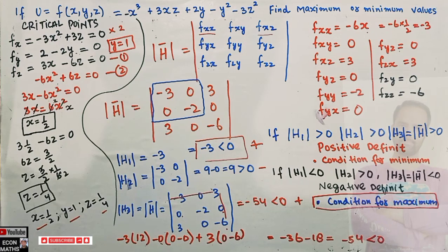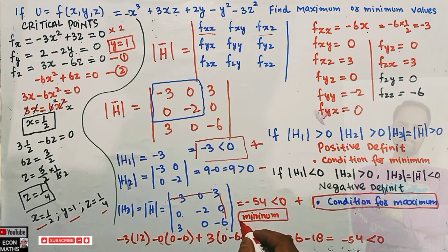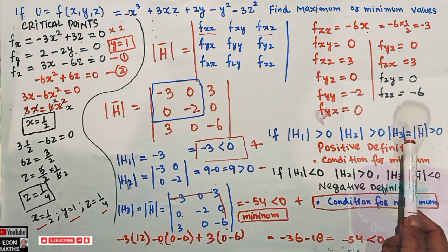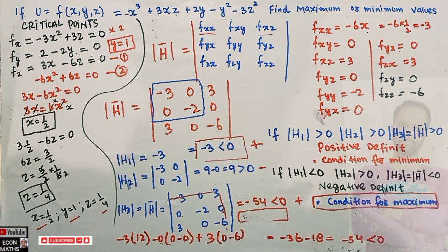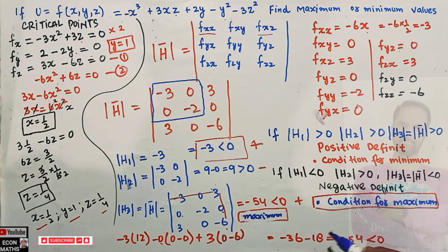Our H1, H2, H3 change signs alternatively: H1 < 0, H2 > 0, H3 < 0. This means the Hessian is negative definite, which satisfies the condition for a relative maximum. So this multivariate function achieves a maximum at the critical point x = 1/2, y = 1, z = 1/4.